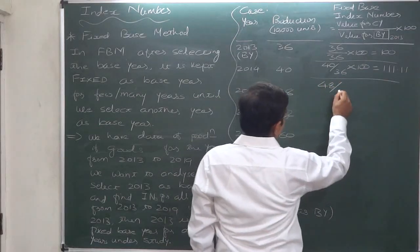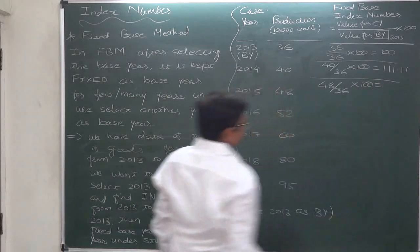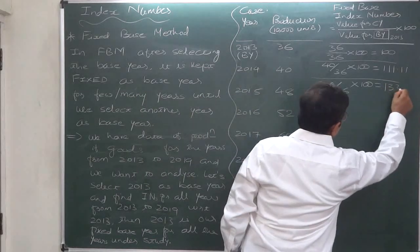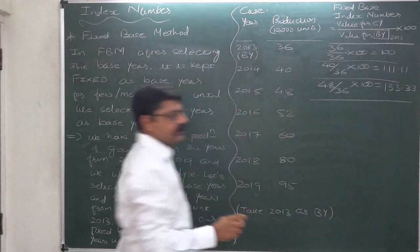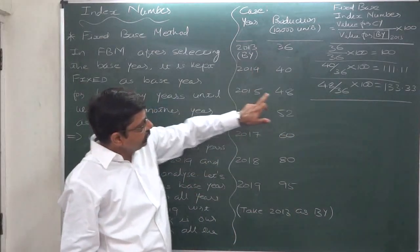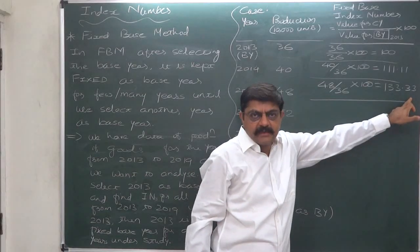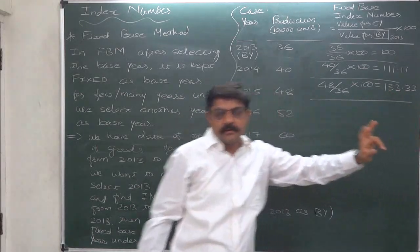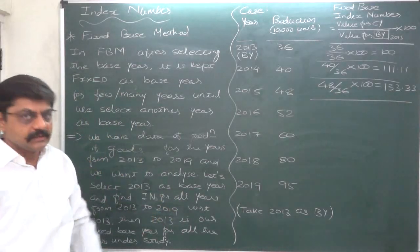Now let's calculate for 2015. The value for the current year is 48, the value for the base year remains 36, multiplied by 100, and it comes to 133.33. The interpretation is: as compared to 2013, in 2015 the production was 133.33 percent — meaning there was a growth of 33.33 percent as compared to the year 2013.